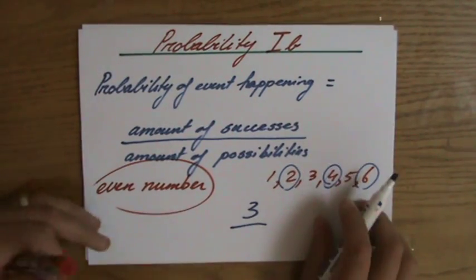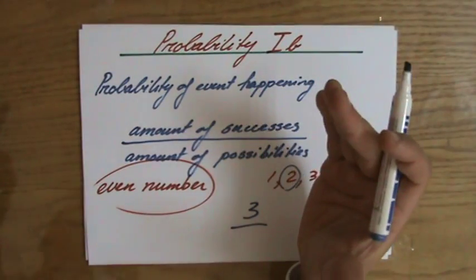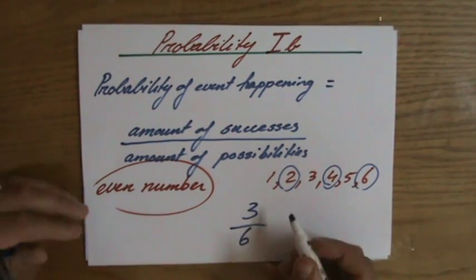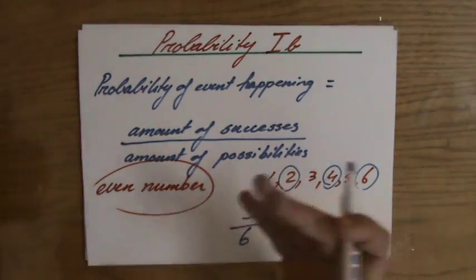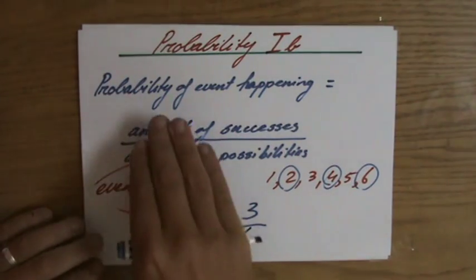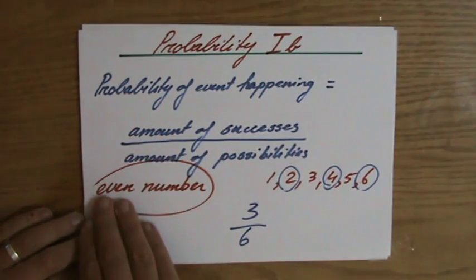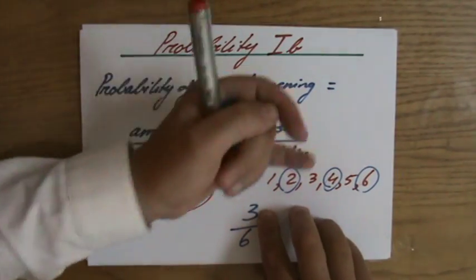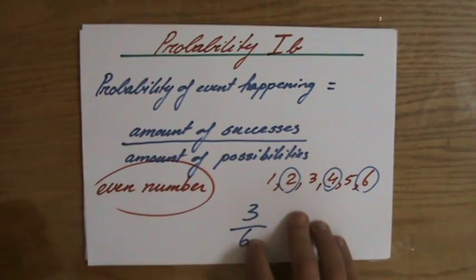Out of the amount of possibilities, what are my possibilities when I'm rolling a dice? One, two, three, four, five, six of them. So my probability, or the probability of this particular event happening, the event of rolling an even number, is three, the amount of successes, over the amount of possibilities, six.